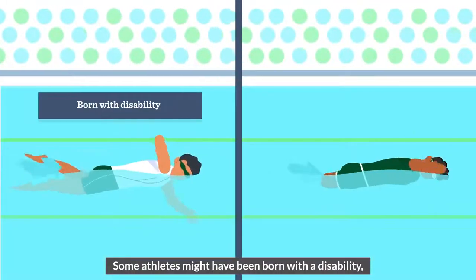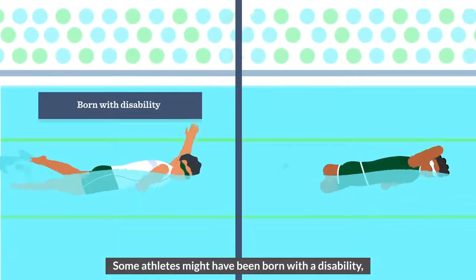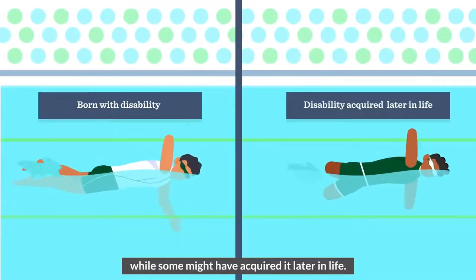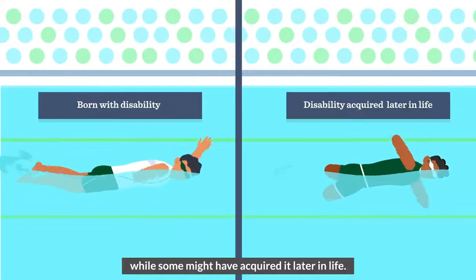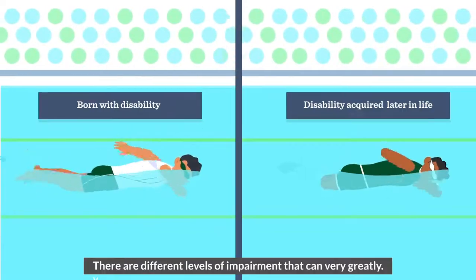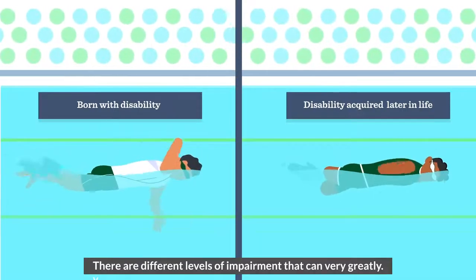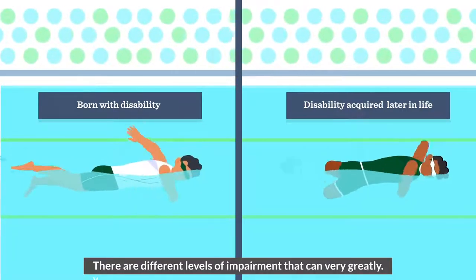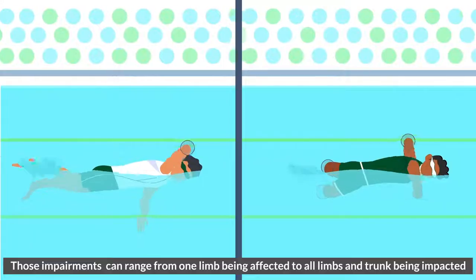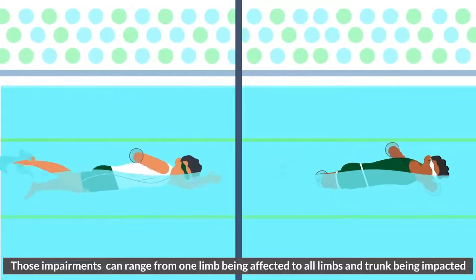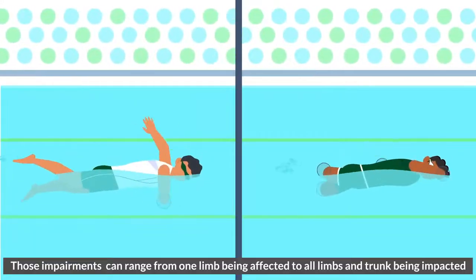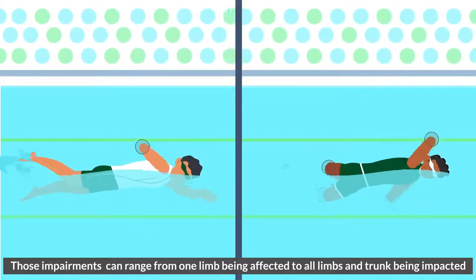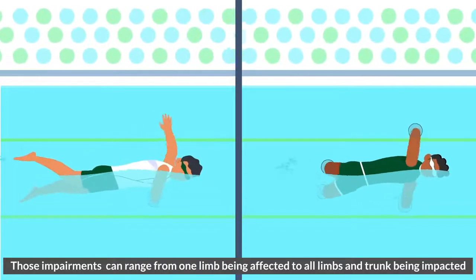Some athletes might have been born with a disability, while some might have acquired it later in life. There are different levels of impairment that can vary greatly, ranging from one limb being affected to all limbs and trunk being impacted.